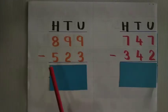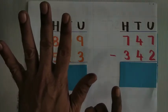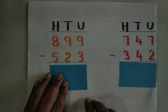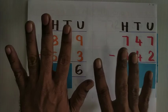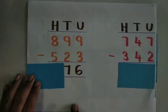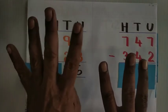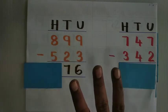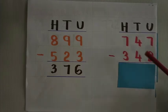899 minus 523. Let us start from the units place. 9 minus 3 is 6. 9 tens minus 2 tens is 7. 8 hundredths minus 5 hundredths is 3. So the answer is 376. Next sum: 747 minus 342.